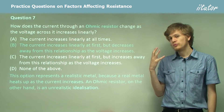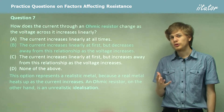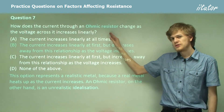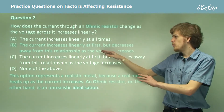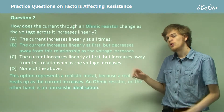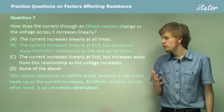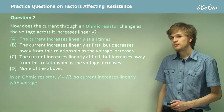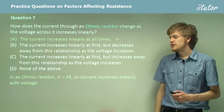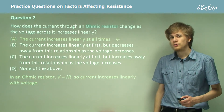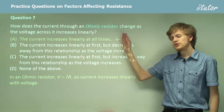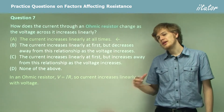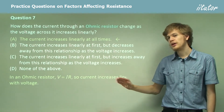This is true of resistors in the real world, but resistors in the real world are not ohmic resistors. Because we decrease away from the relationship, we're no longer following Ohm's law, V = IR. So the correct answer is A: the current increases linearly at all times. An ohmic resistor always obeys V = IR, meaning there's a linear relationship between current and voltage.